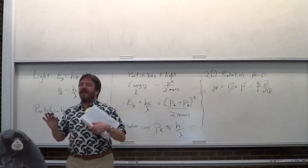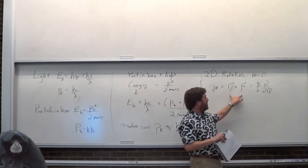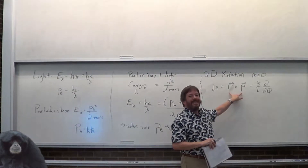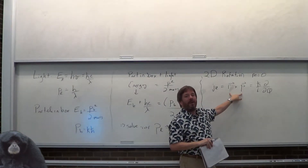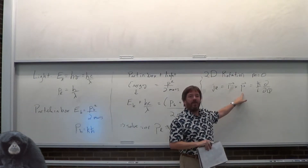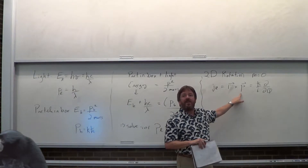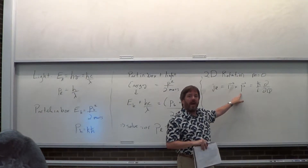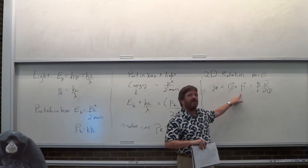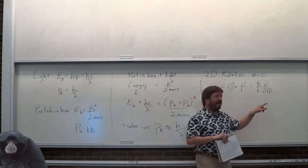This is about a half-hour derivation: turn position to a vector, turn momentum to a vector, convert ddx and ddy into r and phi, then simplify. It takes about 20 minutes. Then you get this: J_z = (hbar/i) d/dφ. I'm just not going to do that.